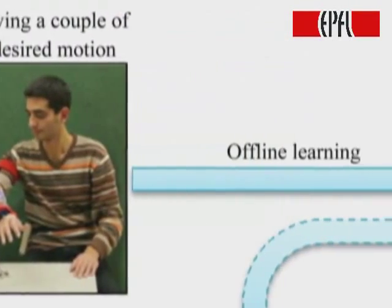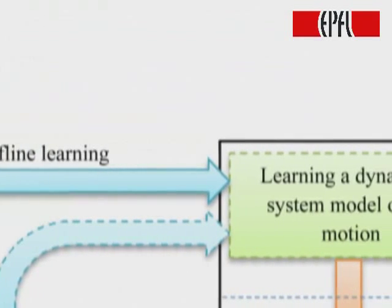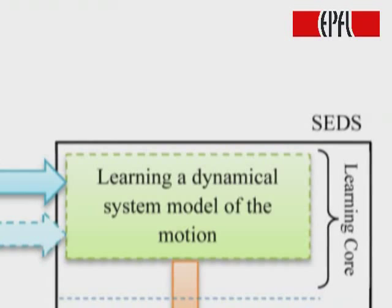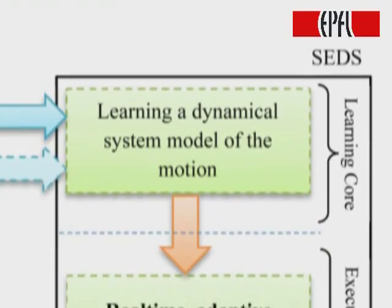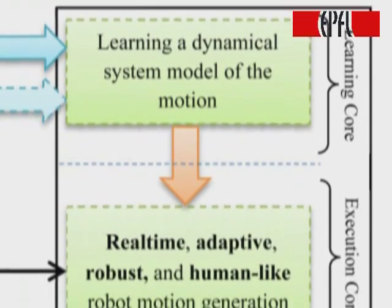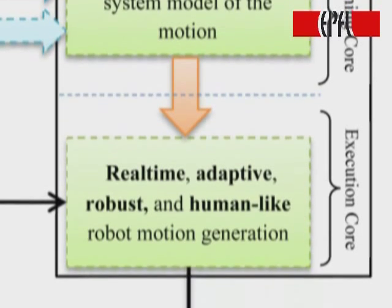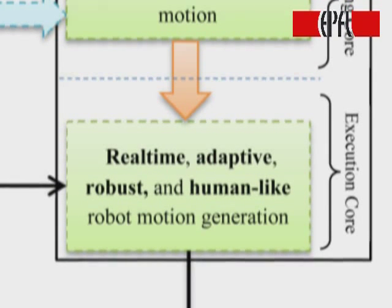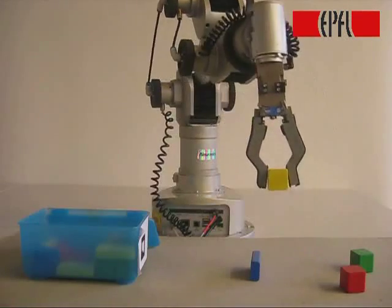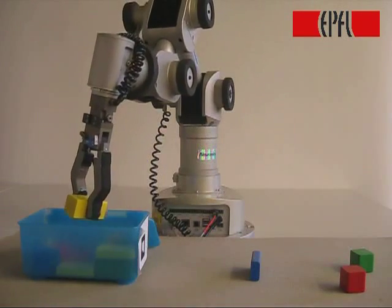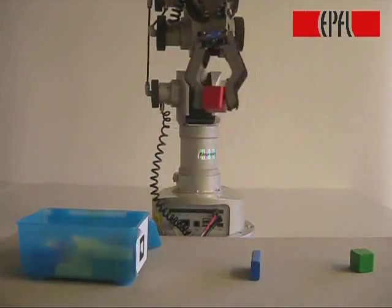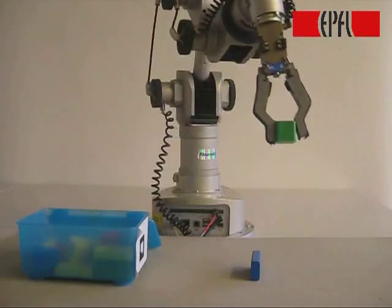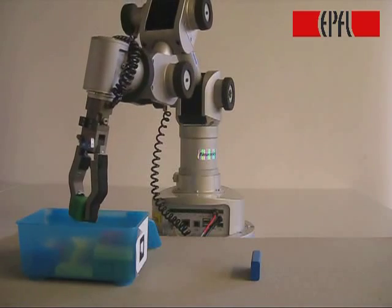After this step, the learning core of SEDS uses the provided demonstrations to build a generic model of the desired task. The learned model is then sent to the executive core of SEDS, where it can now control your robot in real time to perform the task in the way that you taught. Your robot not only is able to do the task, but also it can generalize it to different situations. This is because SEDS learns the main features of the motion rather than just mimicking the demonstration.